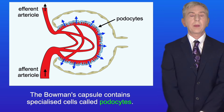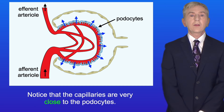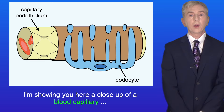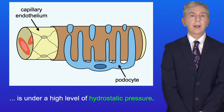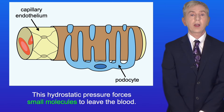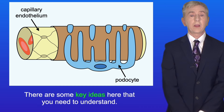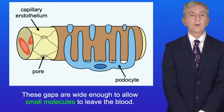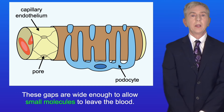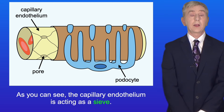The Bowman's capsule contains specialized cells called podocytes, and we can see these here. Notice that the capillaries are very close to the podocytes. Here is a close-up of a blood capillary and a podocyte. The blood in this capillary is under a high level of hydrostatic pressure, and this forces small molecules to leave the blood. There are gaps or pores between the endothelial cells of the capillary. These gaps are wide enough to allow small molecules to leave the blood, so the capillary endothelium is acting as a sieve.